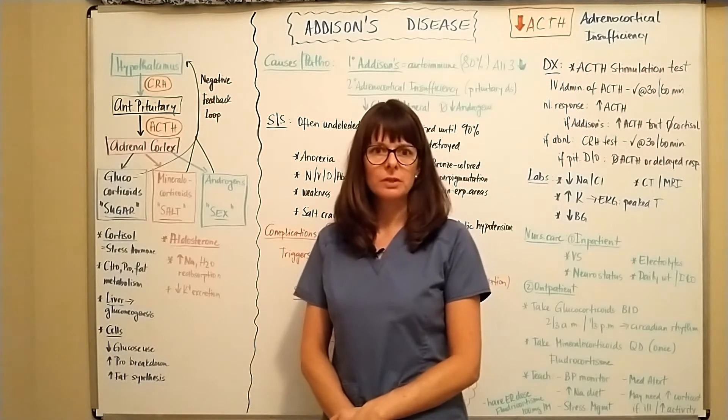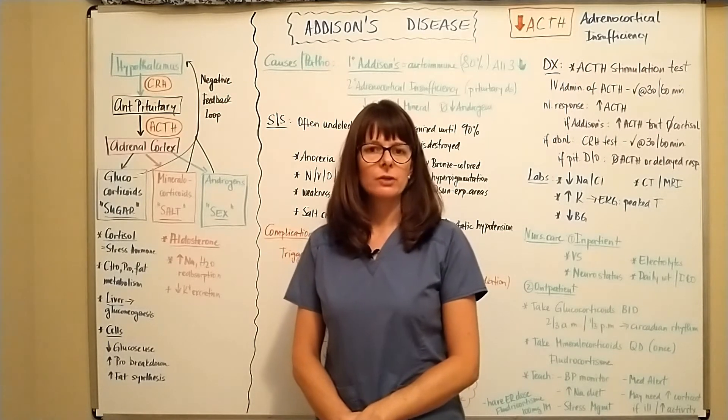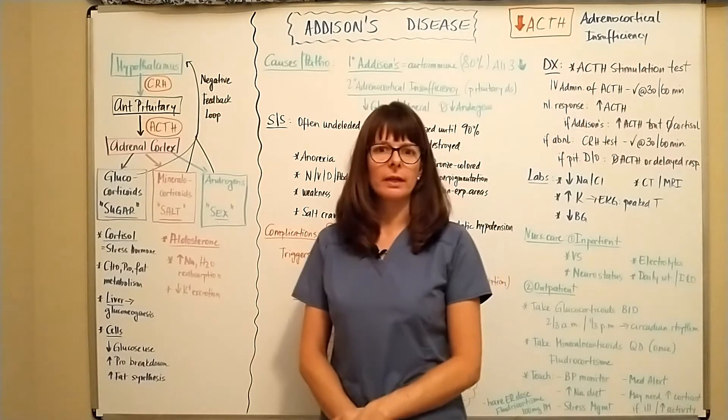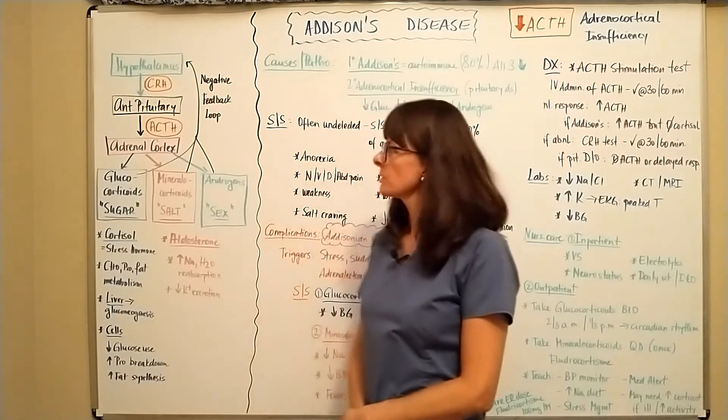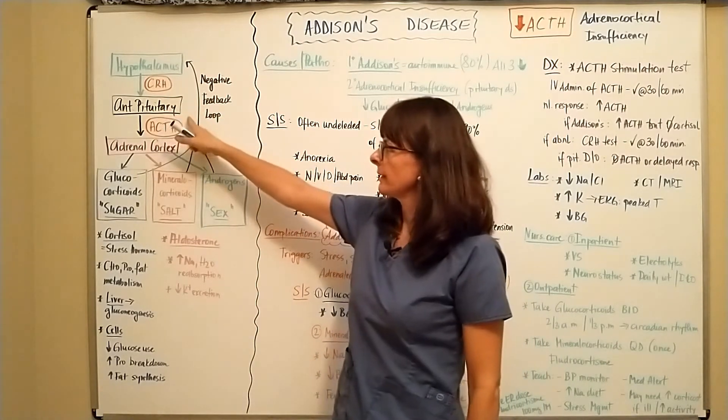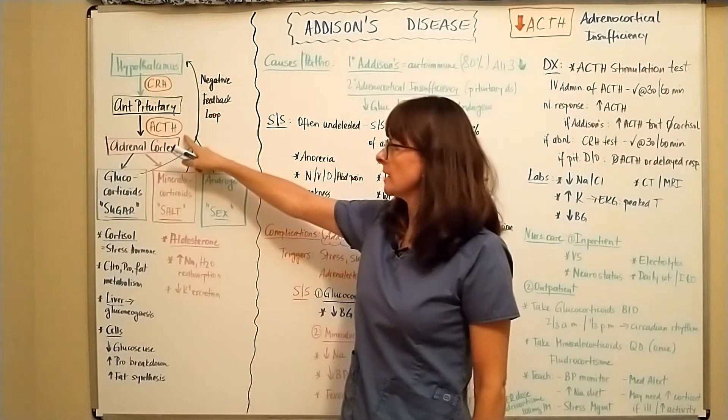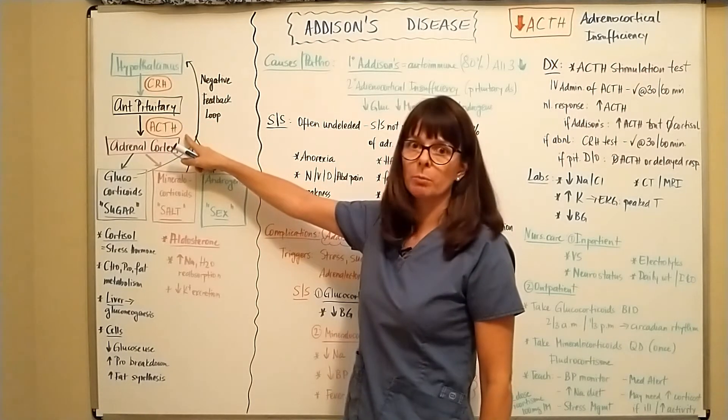But before we look into the details, let's review the hypothalamic pituitary and adrenal axis and how it regulates our hormones. The hypothalamus releases corticotropin-releasing hormone that stimulates the anterior pituitary to release ACTH or adrenocorticotropic hormone.